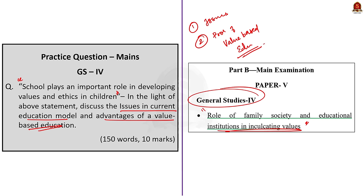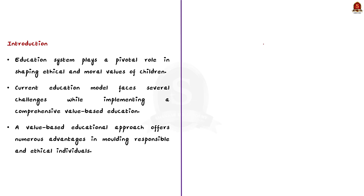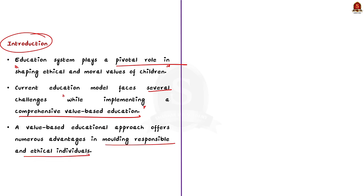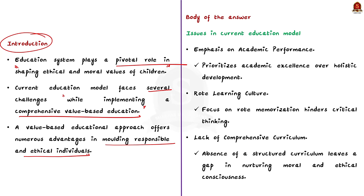For the introduction: the education system plays a pivotal role in shaping the ethical and moral values of children and contributes significantly to their overall development. However, the current educational model faces several challenges in implementing comprehensive value-based education, while a value-based approach offers numerous advantages in moulding responsible and ethical individuals. Moving to the body — the first issue is the emphasis on academic performance. The prevalent education system prioritises academic excellence over the holistic development of children, neglecting the inculcation of moral and ethical values.